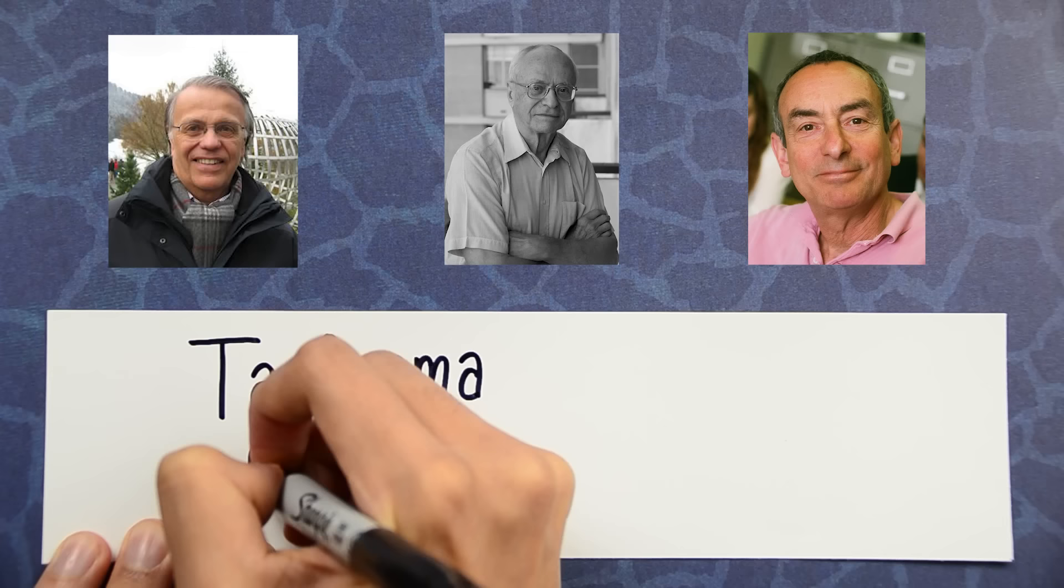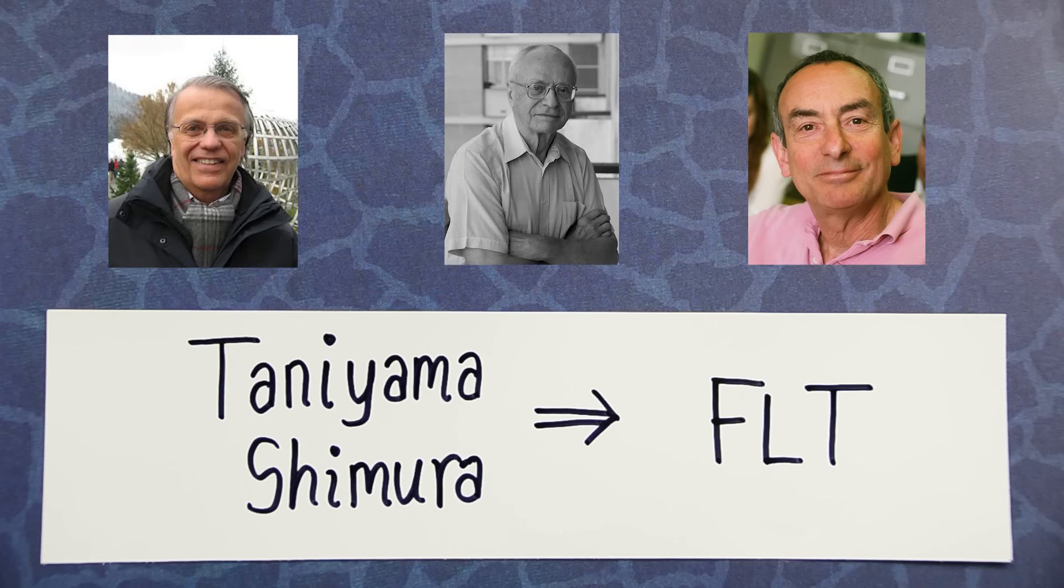And then 20 years later, the stakes were raised even higher, when Frey, Serre, and finally Ribet showed that the Taniyama-Shimura conjecture implied Fermat's Last Theorem.